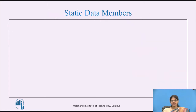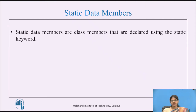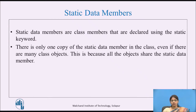Let us see what static data members are. Static data members are the class members that are declared using the static keyword. There is only one copy of the static data member in the class, even if there are many class objects. This is because all the objects share the static data member.